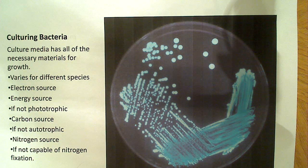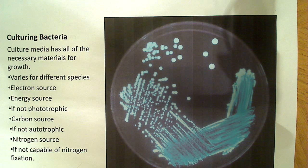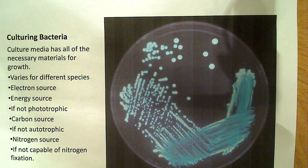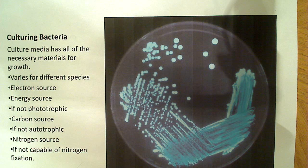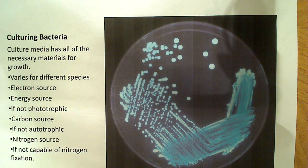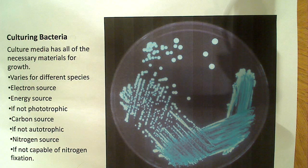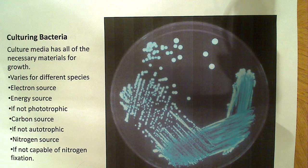Culture media has all of the necessary materials for growth. Generally speaking, most culture media has some nitrogen source, some carbon source, and some basic vitamins and minerals — but it varies for different species. Every species has their own specific nutritional needs. Some of the things you'll have to provide are an electron source, an energy source if it's not phototrophic, a carbon source if it's not an autotrophic bacteria, and a nitrogen source if it's not capable of nitrogen fixation. These are just the basic components of life.